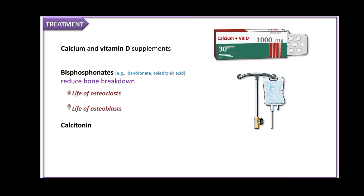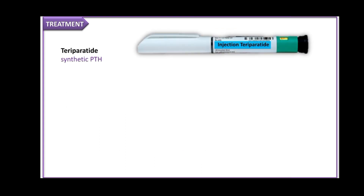Calcitonin causes serum calcium to be deposited into the bones. A diuretic called hydrochlorothiazide helps increase calcium reabsorption in the renal tubules. Teriparatide, which is a synthetic parathyroid hormone, is also used — because while continuous exposure to PTH causes more resorption than formation, intermittent exposure to low-dose teriparatide induces bone formation over bone resorption.